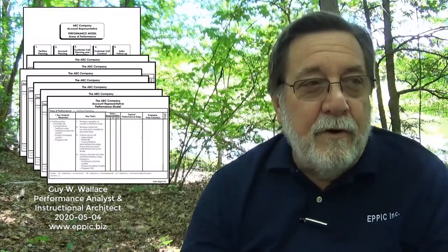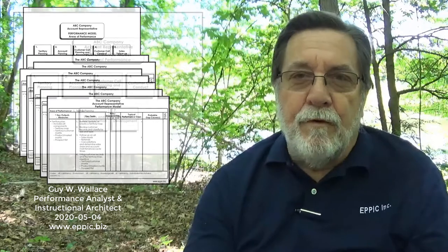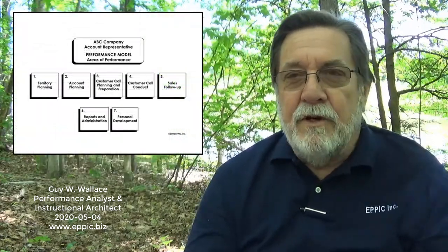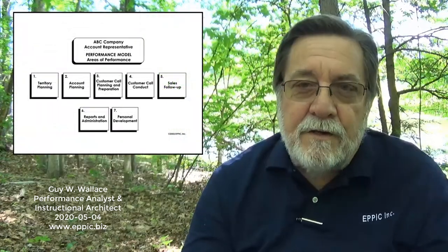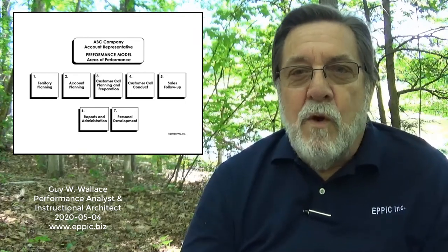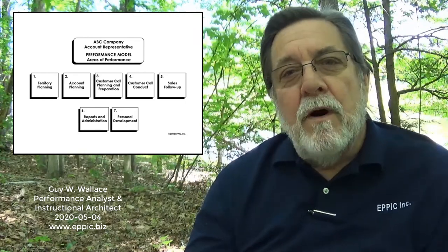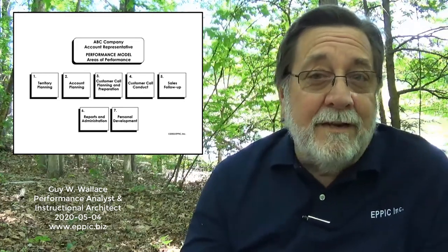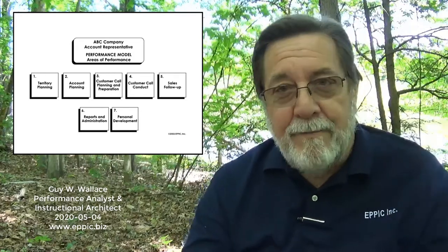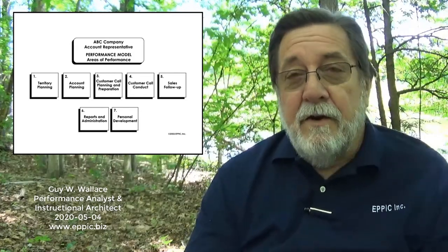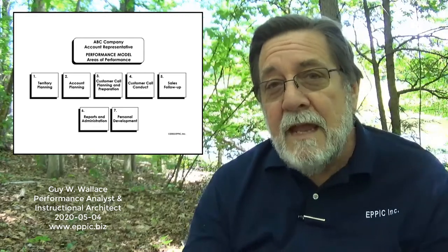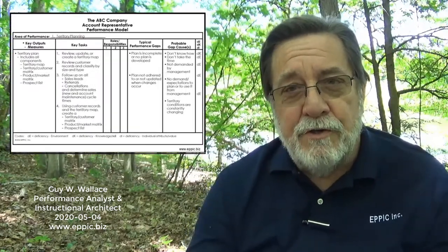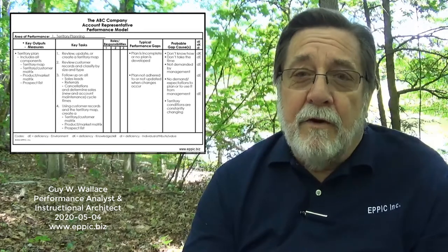Today we're going to take a look at performance modeling, which has two parts. First, there's the areas of performance — a chunking of the overall performance, whether that's for a job, a process, or an entire department. It's one way to segment the scope of work so you can do deeper analysis on all of it, not miss anything, and not overlap anything. The first part, areas of performance, leads to creating performance model charts for each of those areas.